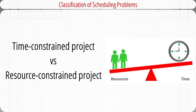On the other hand, a resource-constrained project has a fixed level of available resources that cannot be exceeded. However, the time could be flexible because inadequate resources will delay the project.